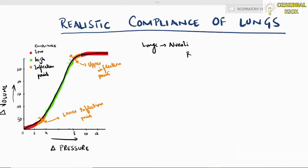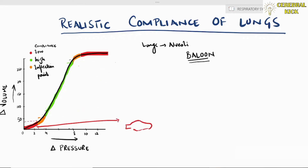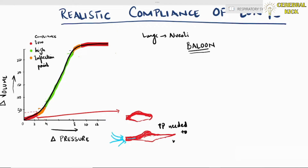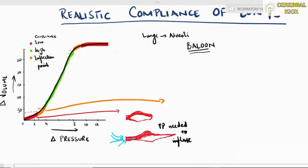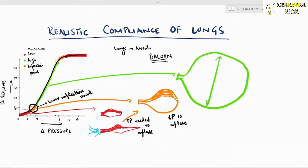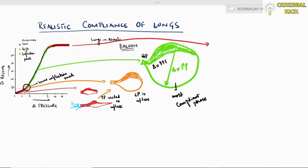A balloon analogy makes this easier to understand. When we inflate a balloon, initially it is in the red zone — greater pressure is required and very little volume change occurs. If you persist, beyond the lower inflection point, the balloon starts inflating at relatively lower pressures, entering the high compliant green zone where a small change in pressure causes a much greater change in volume.